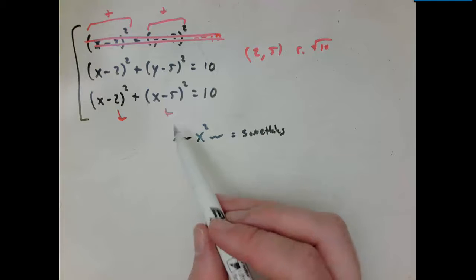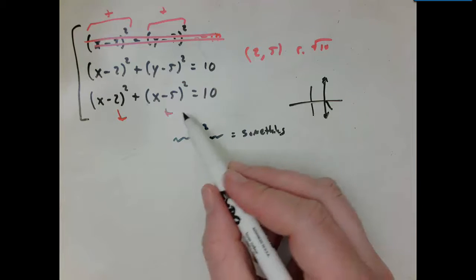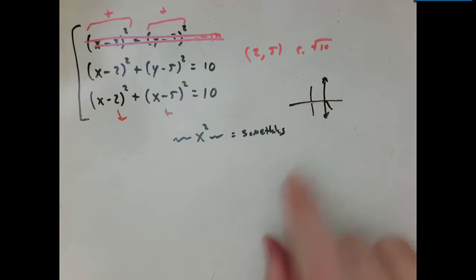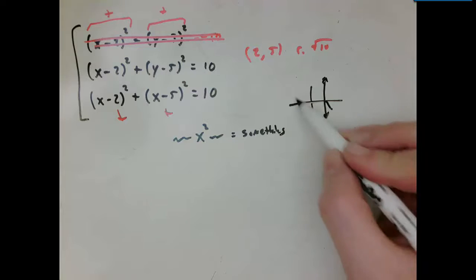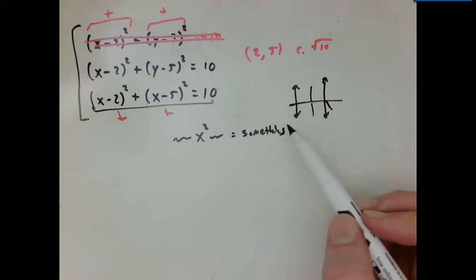So there's a couple possibilities. x could have one solution, in which case the graph would just be a vertical line at the solution. It could be that x has no solutions, in which case there's no graph. Or it could be that x has two solutions, in which case the graph of this would be two separate vertical lines at each of the solutions for x.